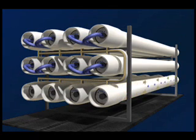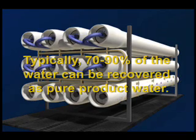The permeate water then flows out the end of the vessel and is collected as the product. And the reject or concentrate from that vessel may then flow through another vessel producing more permeate. The remaining concentrate may then be disposed of as waste or partially recycled as the feed. Typically 70-90% of the water can be recovered as pure product water.